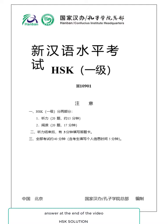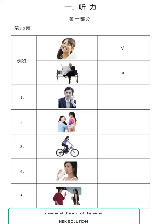HSK一级听力考试分四部分，共二十题。请大家注意，听力考试现在开始。第一部分，一共五个题，每题听两次。例如：很高兴。看电影。